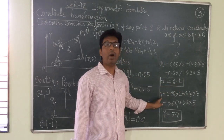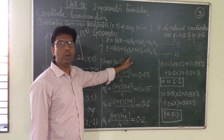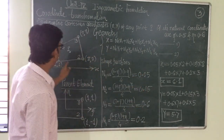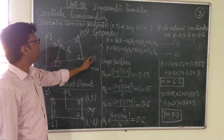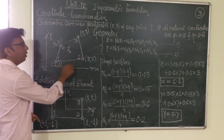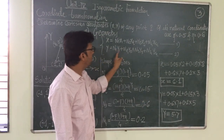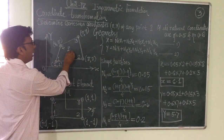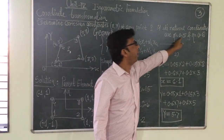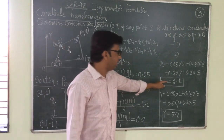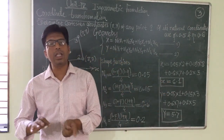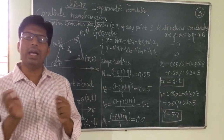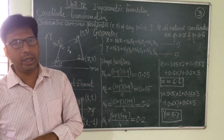Similarly, to calculate the y coordinate of point P: y equals N1·y1 + N2·y2 + N3·y3 + N4·y4. With N1 to N4 as computed and y1, y2, y3, y4 equal to 1, 3, 7, 5 respectively, substituting gives y equal to 5.7. Therefore, for any point P whose natural coordinates are xi = 0.5 and eta = 0.6, the Cartesian coordinates are x = 6.1 and y = 5.7. This is coordinate transformation from natural coordinates to Cartesian coordinates. In the next lecture we will see how to transfer Cartesian coordinates into natural coordinates.